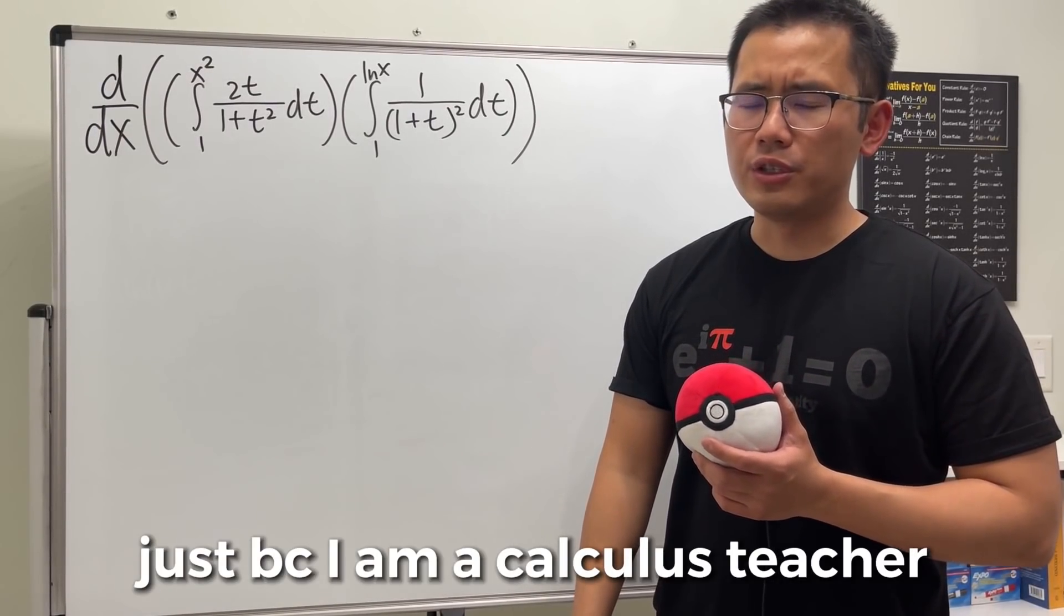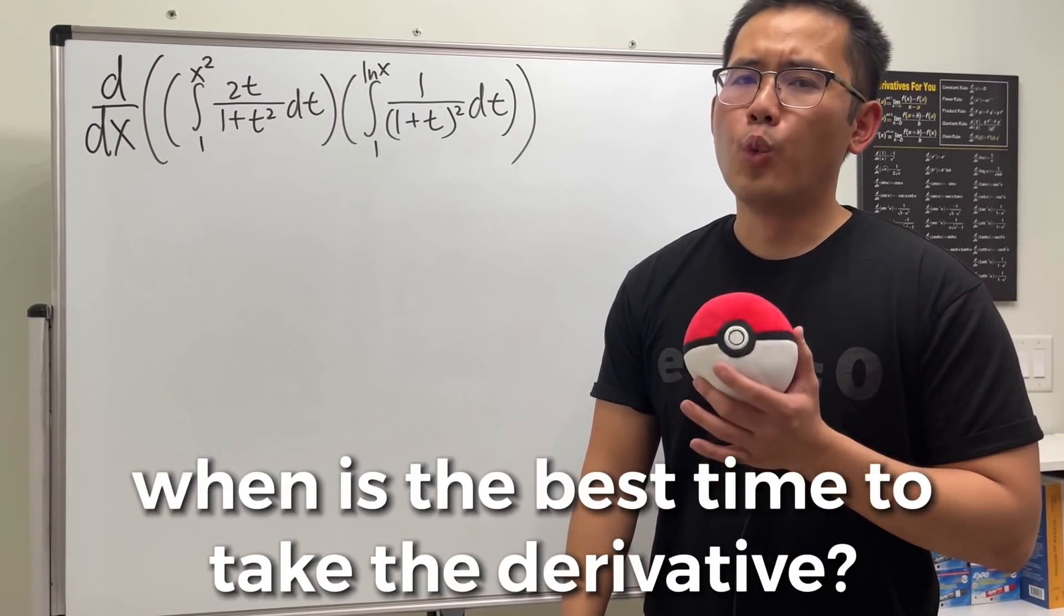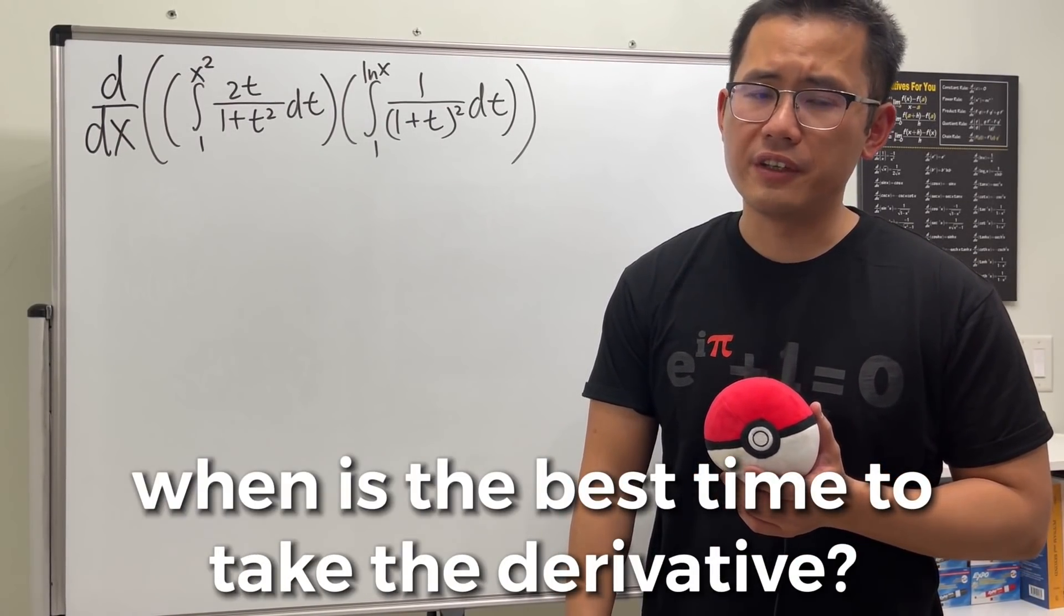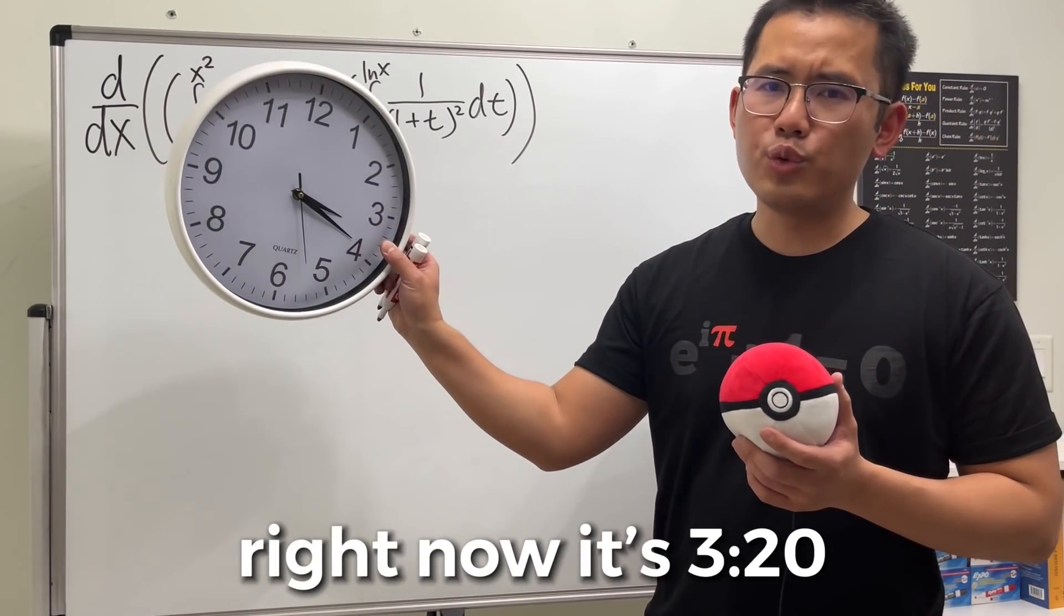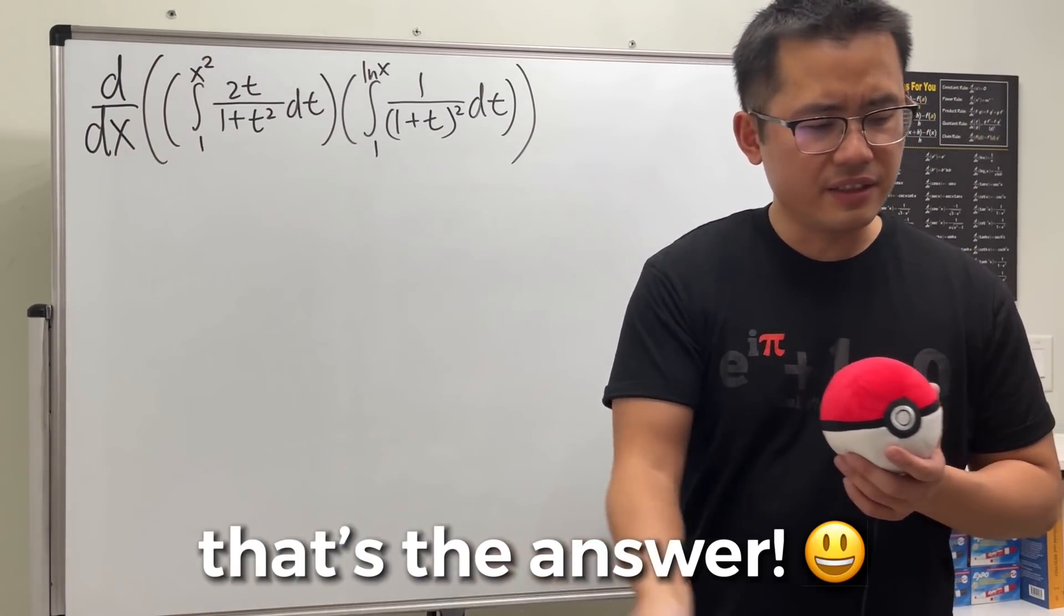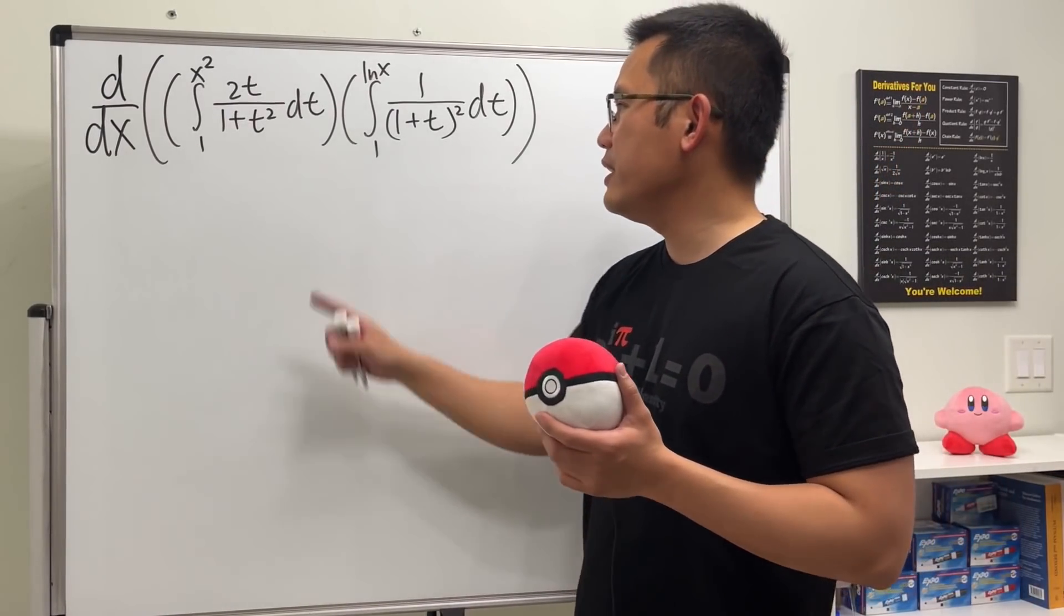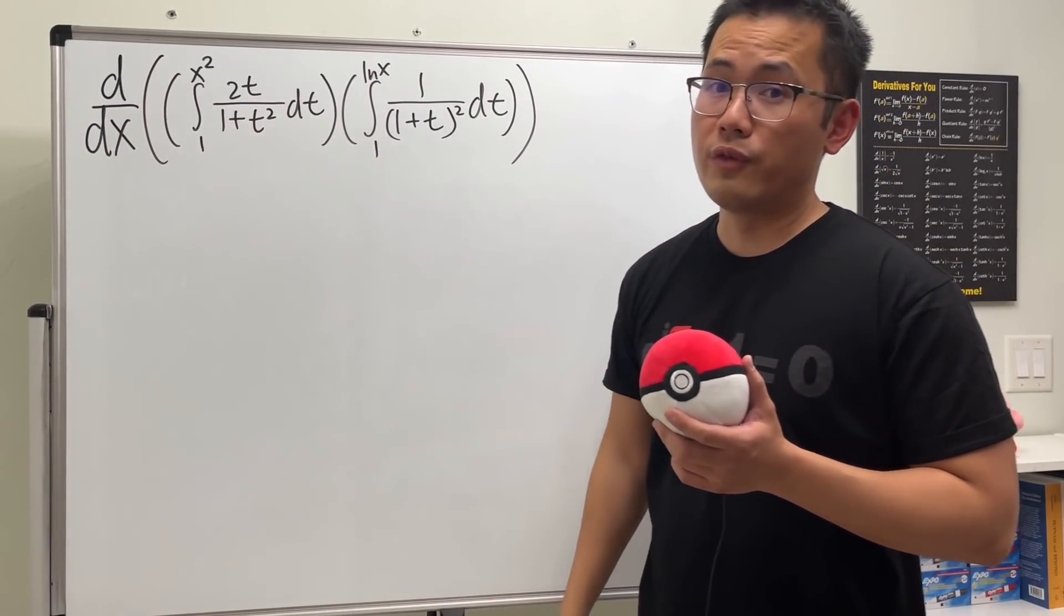Just because I'm a calculus teacher, a lot of people like to ask me when is the best time to take the derivative. Well, let's take a look. Right now it's 3:20, and here you go, that's the answer. We will be differentiating the product of these two integral functions.